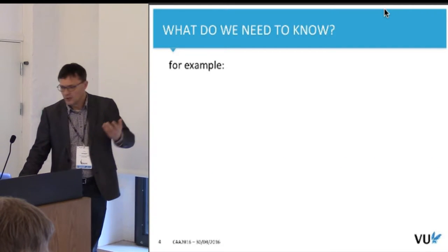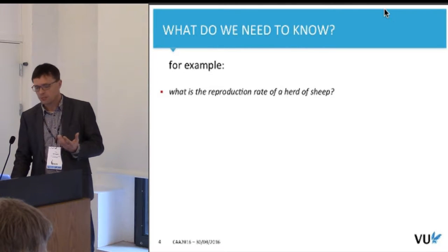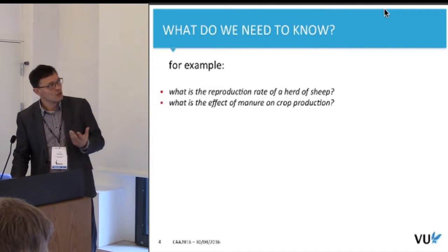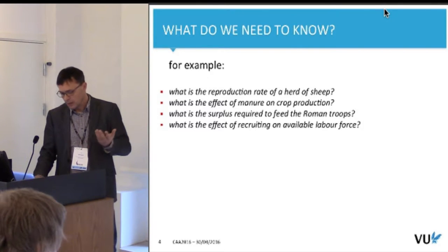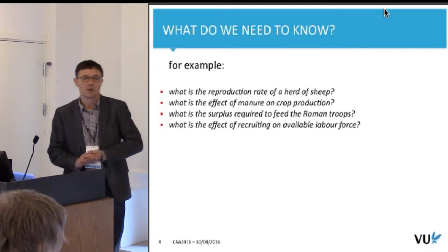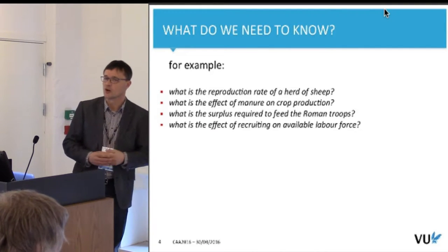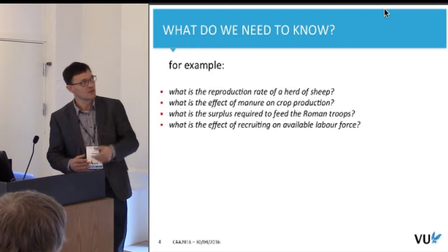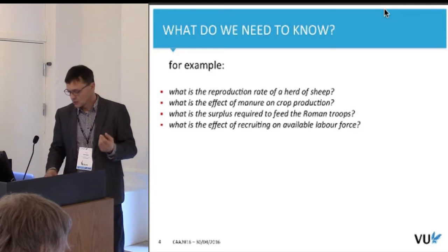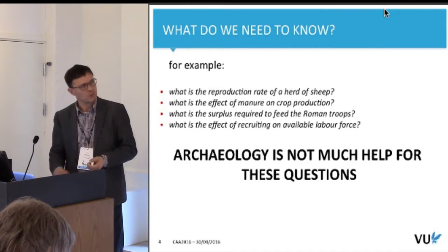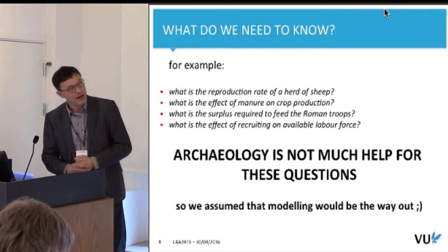What did we want to know? For example: what is the reproduction rate of a herd of sheep? What is the effect of manure on crop production? What is the surplus required to feed the Roman troops? And what is the effect of recruiting from the available labor force — a specific question here, because it is known from historical sources that the local population was recruited to fight in the Roman army. These are not necessarily questions that need agent-based modeling, but simulation, we thought, might be the way out since archaeology is not much help for these questions.